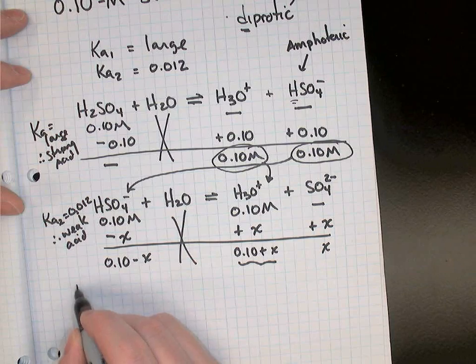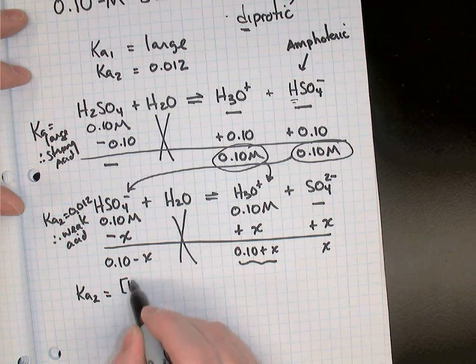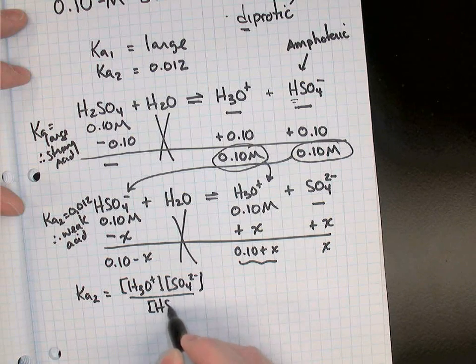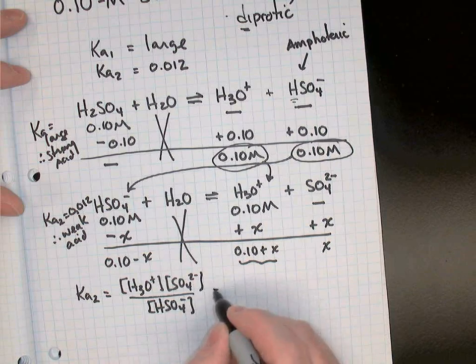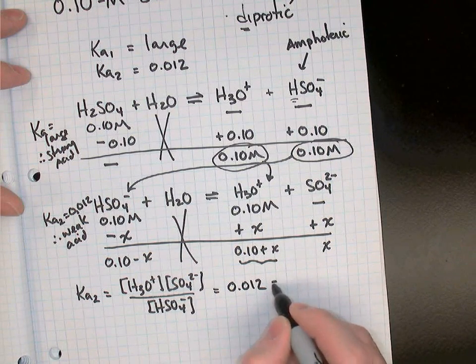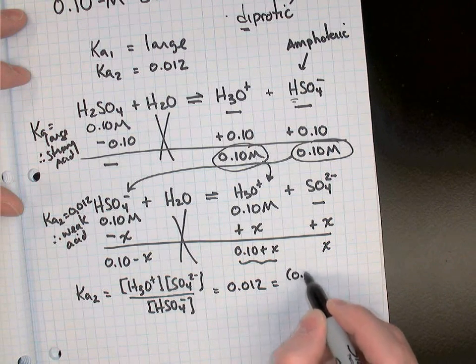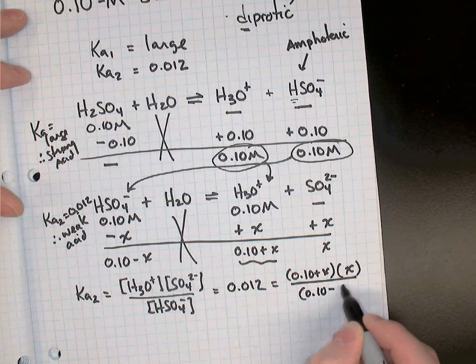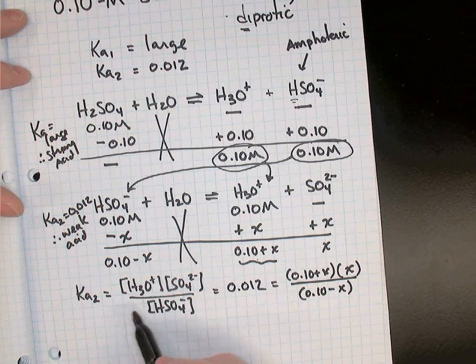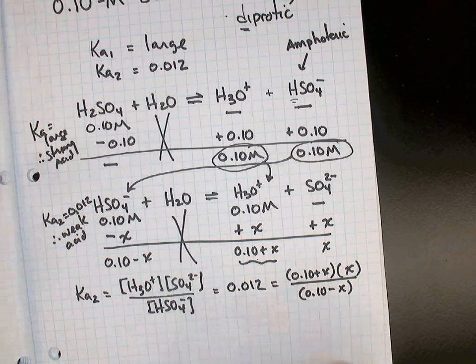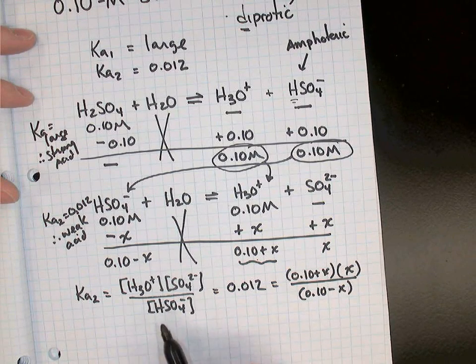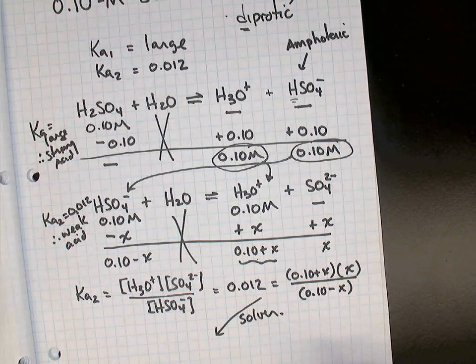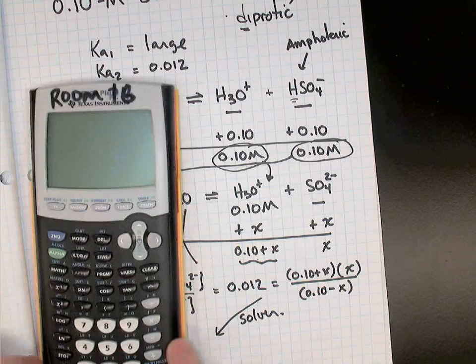So how do we solve this? We're going to write the Ka expression for step two. It's equal to concentration of hydronium times sulfate over concentration of HSO4-. So it equals 0.012, that's the Ka value. And we're not going to get an X squared now. We're going to get 0.10 plus X times X divided by 0.10 take away X. I'm putting in these three things from the equilibrium line into the equilibrium expression. All of our exponents are ones because the coefficients were ones in the balanced equation. Now if you own a TI-84 solver, TI-83 solver, this is going to be very easy. But you do have to be careful with your brackets. So let's jump in here and solve this with the graphing calculator.